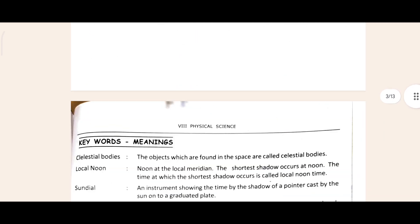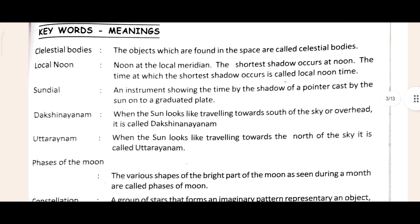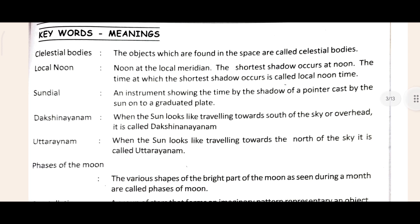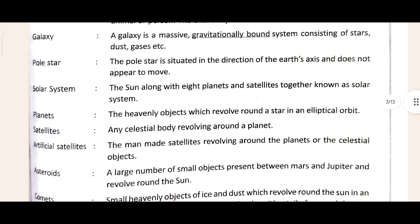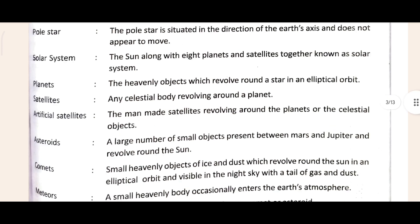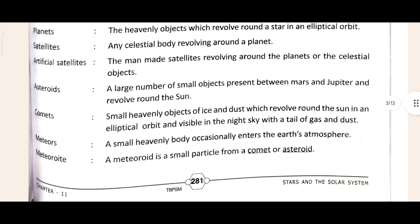After that, keywords are also given - keywords mean their meanings. You can see here: local noon, sundials, galaxy, polar star, solar system, planets, satellites, artificial satellites, and so on. I hope this is clear for you.